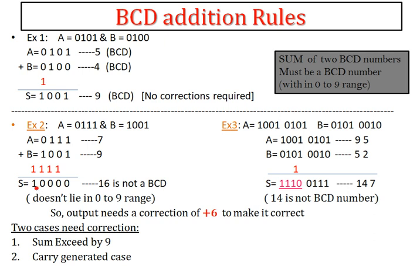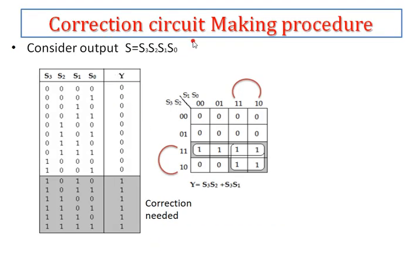To design the adder circuit, I first need to design a correction circuit. The sum values are S3, S2, S1, S0. If the sum is 0 through 9, no correction is required. But for sums of 10, 11, 12, 13, 14, and 15, correction of plus 6 is required. I assign 1 for these cases to determine when correction is needed.